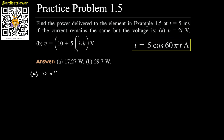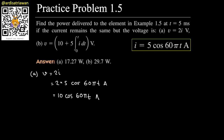For part (a), we have v = 2i. Since i = 5 cos(60πt), the voltage becomes v = 2 × 5 cos(60πt) = 10 cos(60πt). The power is voltage multiplied by current.